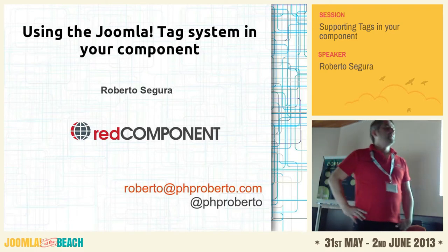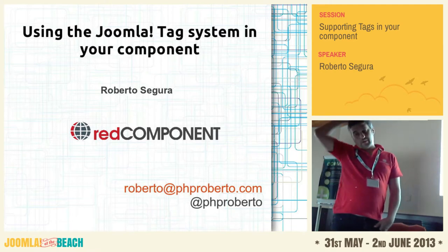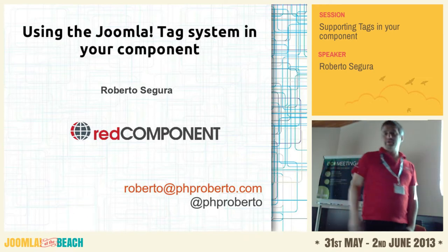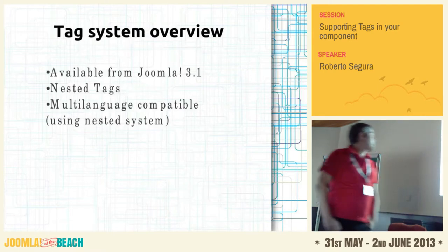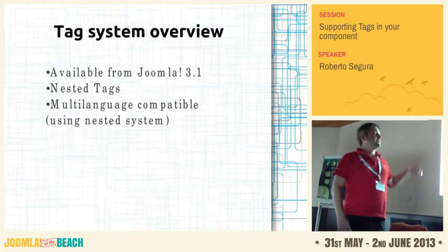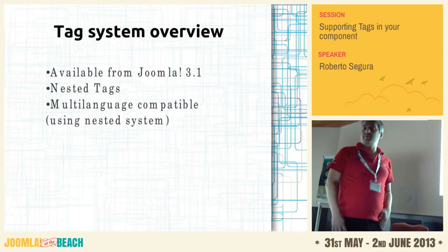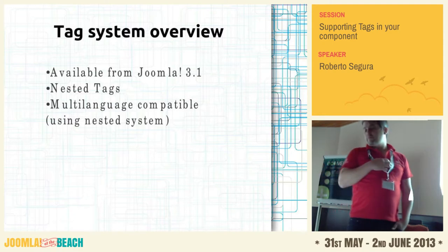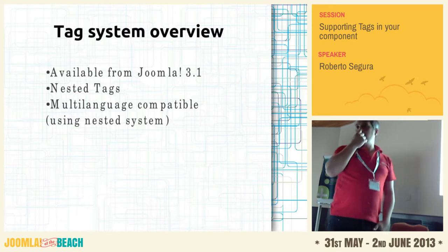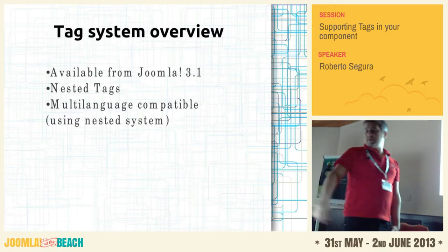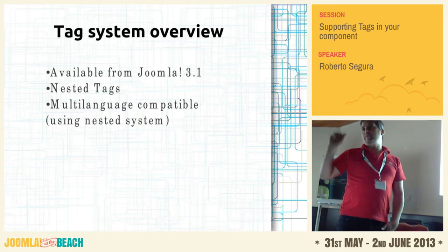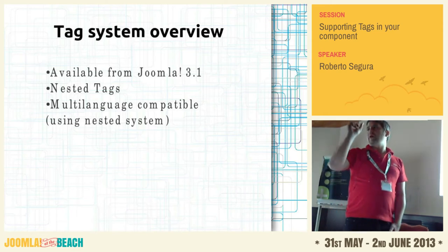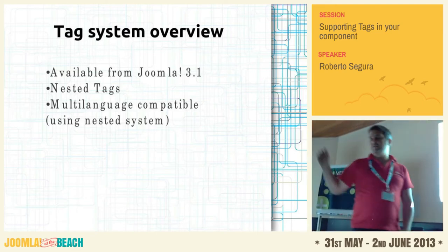We are going to talk about implementing the tag system in your component. It's a feature from Joomla 3.1. The tag system's end result is really cool. We have to improve some things, but the overall system works almost perfectly. It includes nested tags and multi-language compatibility.